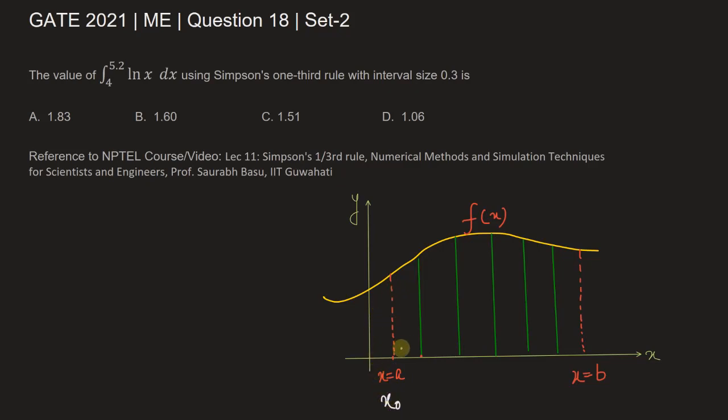Similarly, this is y₁, this is y₂, and so on, and at the end it is called yₙ. Here x equals b, this is equal to b. This is called x₀ plus n times h.